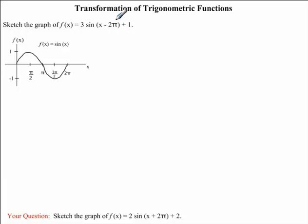The first transformation that we want to consider is this -2π. Subtracting 2π from x will cause our graph of sin(x) to move in the rightward direction by 2π units. In other words, we want to take all our x values on our graph of sin(x) and add 2π to them.